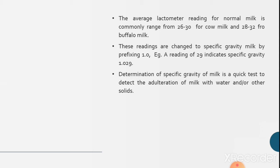In this way we determine the specific gravity or density of the milk by using lactometer. Determination of specific gravity of milk is a quick test to detect the adulteration of milk with water and or other solids. If we add water or any other solids into the milk which decreases the density of the milk, this lactometer test is used to determine the adulteration.